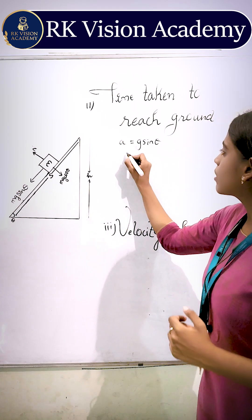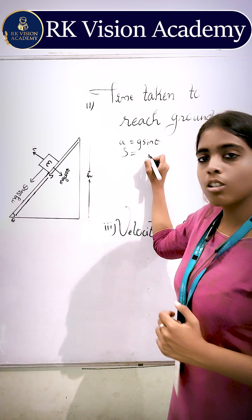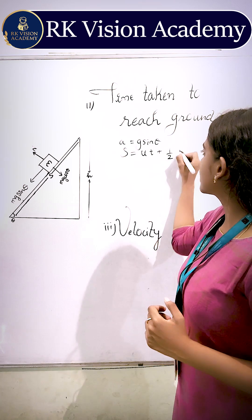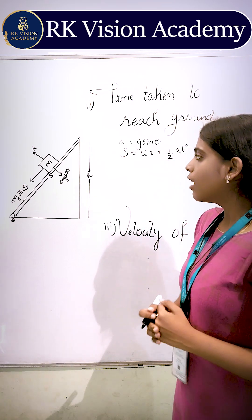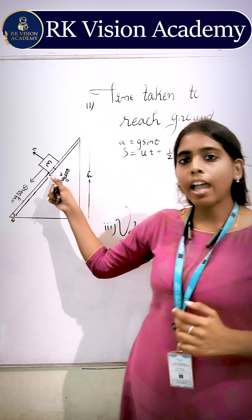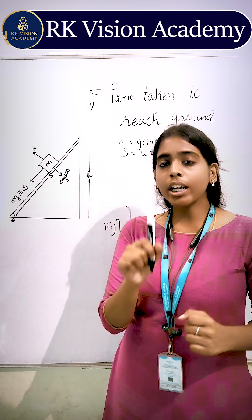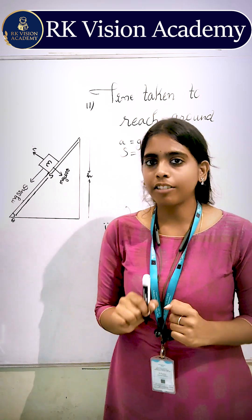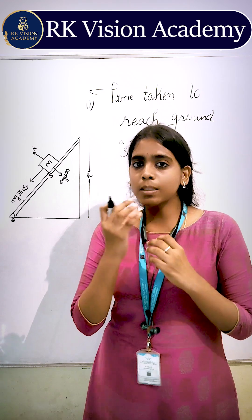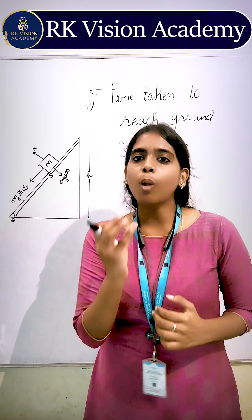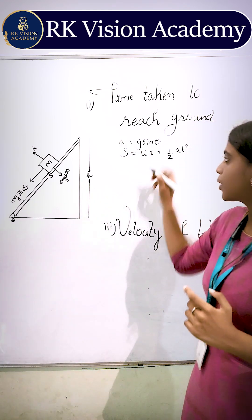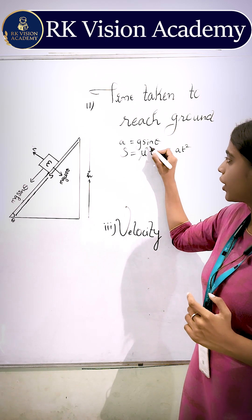Therefore, using the equation of motion, we know s = ut + ½at². In the block, the only force acting is gravity — there is no other force. Because of gravitation, the block starts to slide. So, the initial velocity of the block is going to be zero.